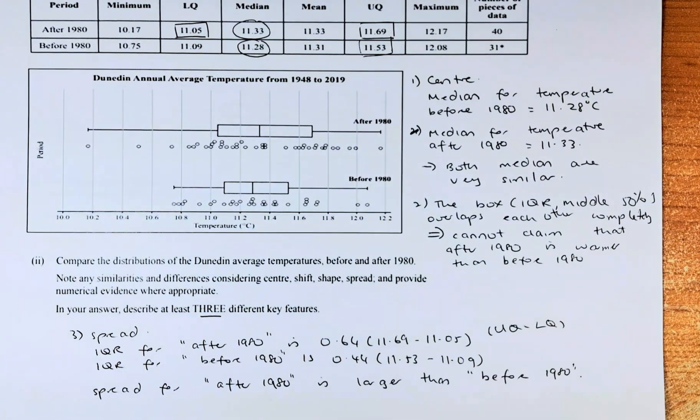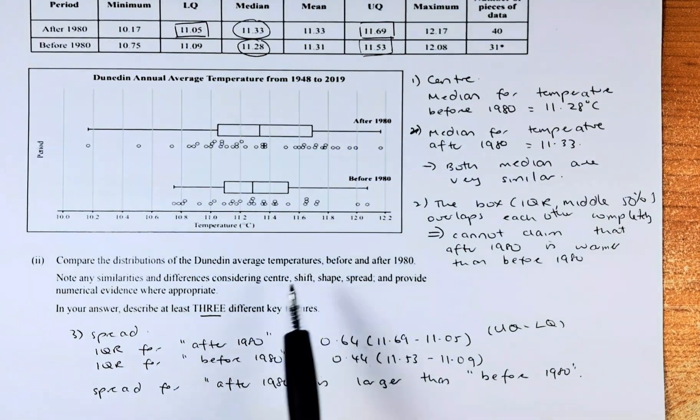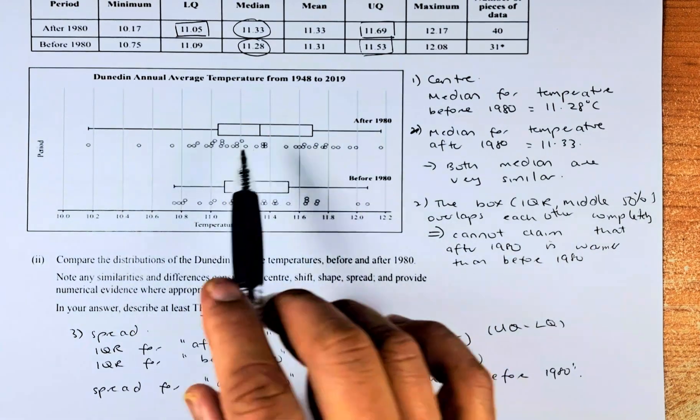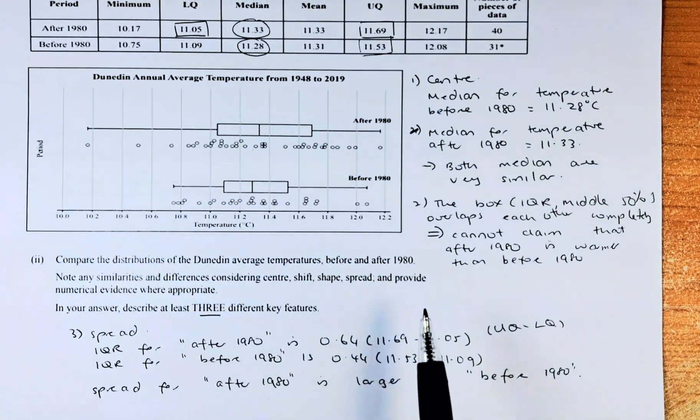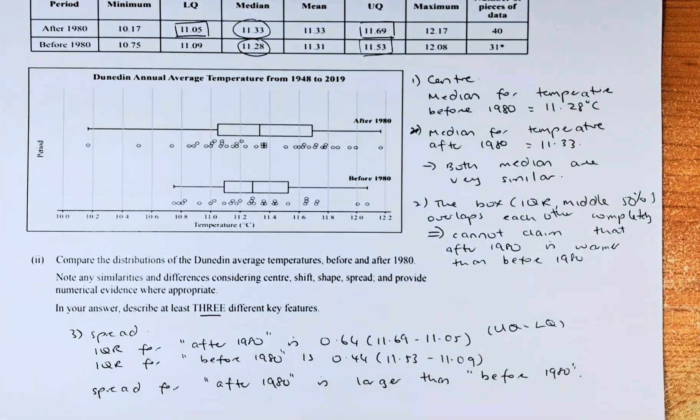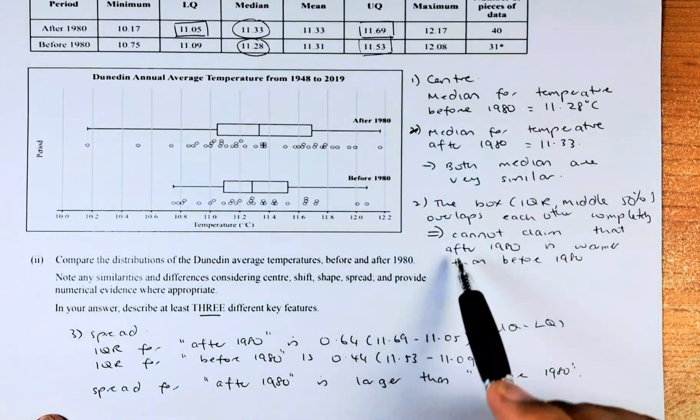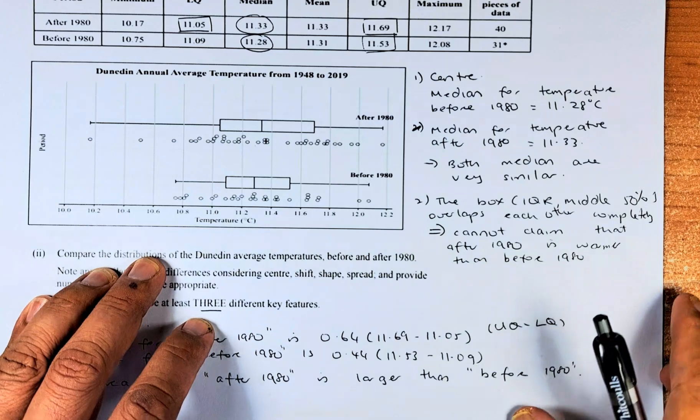You can answer all three of them. You can talk about the shift. There's not much shift because they are all in the same region, so there's no shift. Or you can talk about outliers and other things. And that will give you an excellence. You need three. So you got one, two, three, and you get an excellence for this paper.